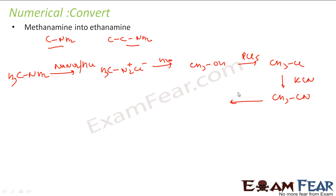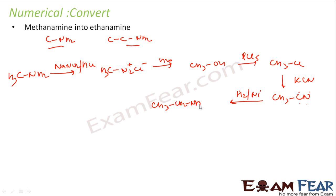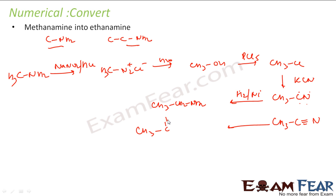Once I have CH3CN, I don't want to make COOH — I want to make CH2NH2 directly. So I do hydrogenation: add H2 with a nickel catalyst. Hydrogen is added across the triple bond (C≡N), giving CH3CH2NH2, which is ethaneamine. The triple bond breaks and hydrogen is added at each position.